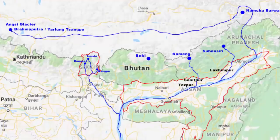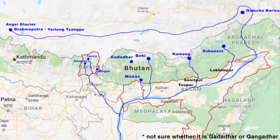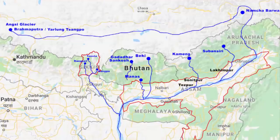The third river is Beki. It originates from the Himalayan glaciers in northern Bhutan, then flows south into the Indian state of Assam and joins the Brahmaputra river basin. The fourth one is River Manas. It originates in the Himalayan mountains of southern Bhutan, goes southwest before entering Assam, and follows a meandering course for about 75 km before joining the Brahmaputra. The fifth river is Gadadhar, also known as Sankosh river. It originates in northern Bhutan, flows south along the border of West Bengal and Assam, and finally drains into the Brahmaputra.